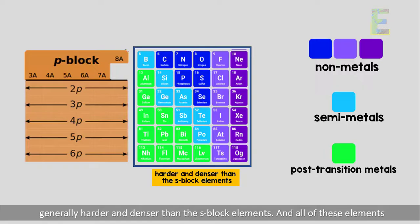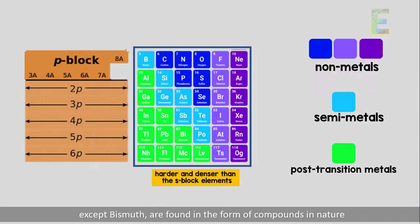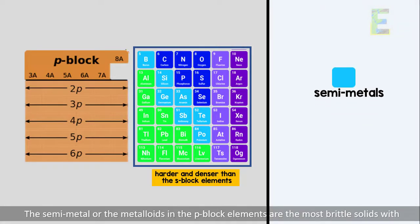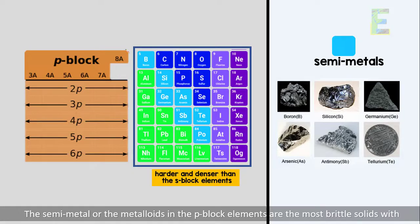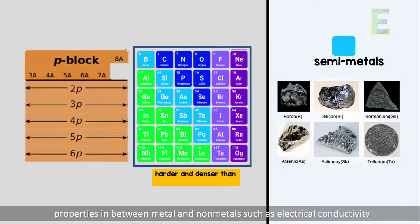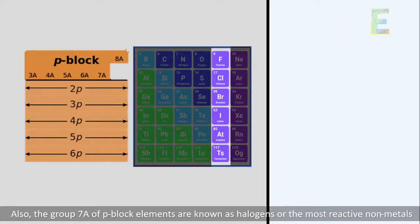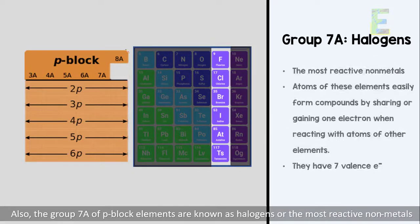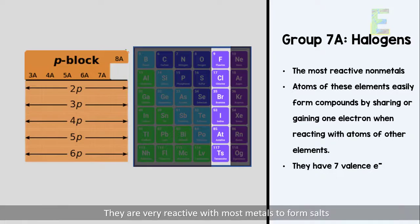All of these elements, except bismuth, are found in the form of compounds in nature. The semi-metals or metalloids in the P block elements are the most brittle solids, with properties in between metals and non-metals, such as electrical conductivity. Also, the Group 7A of P block elements are known as halogens, or the most reactive non-metals. They are very reactive with most metals to form salts.